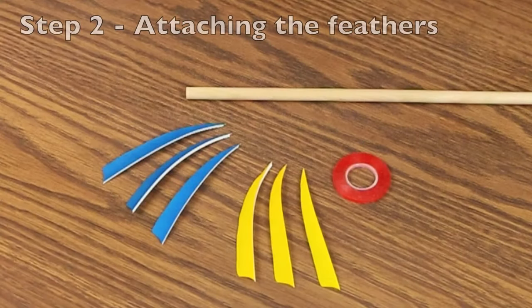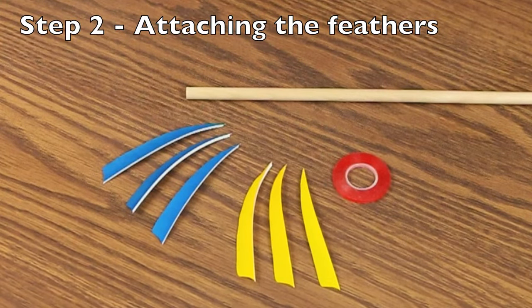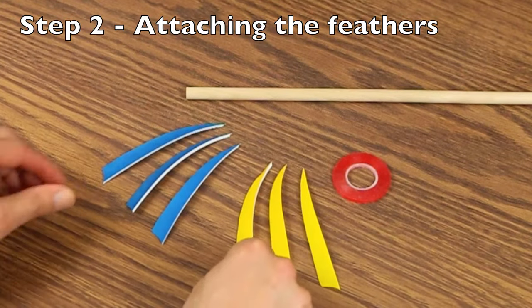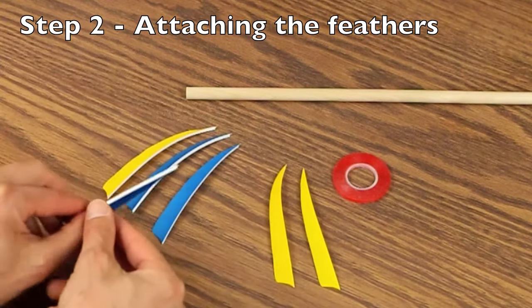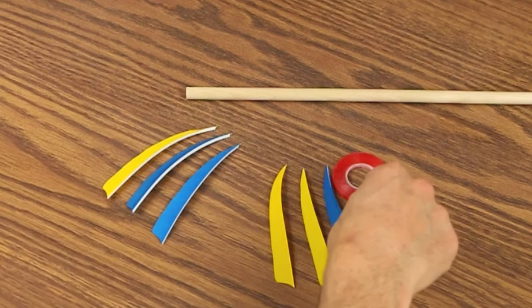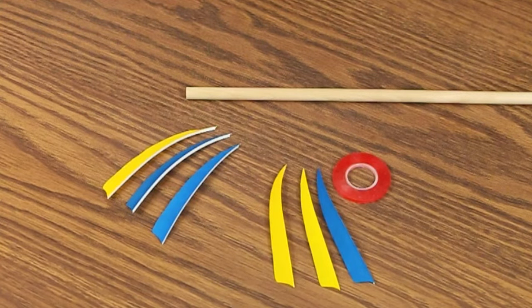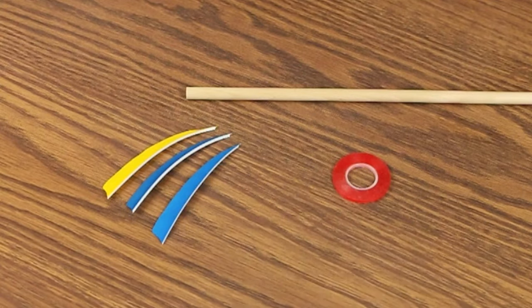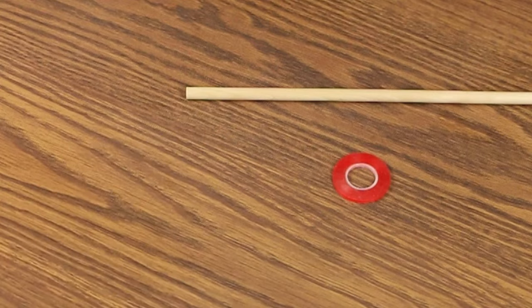The next step is to apply the feathers. This is a kit for two arrows, so we have six feathers, three of each color. The first thing to do is to align them so that you have two of one color and one of the other color in each group. We'll move this over, it'll be for our second arrow, and these will be for our first arrow.